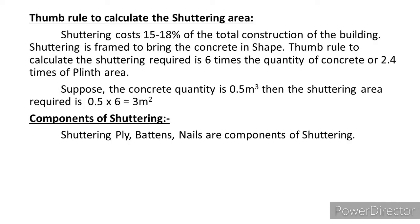Thumb rules to calculate shuttering area: shuttering cost is 15% to 18% of the total construction cost of the building. Shuttering is framed to bring the concrete into shape. The shuttering area required is 6 times the quantity of concrete, or 2.4 times the plinth area. Suppose the concrete quantity is 0.5 cubic meters, then the shuttering area required is 0.5 × 6 = 3 square meters.